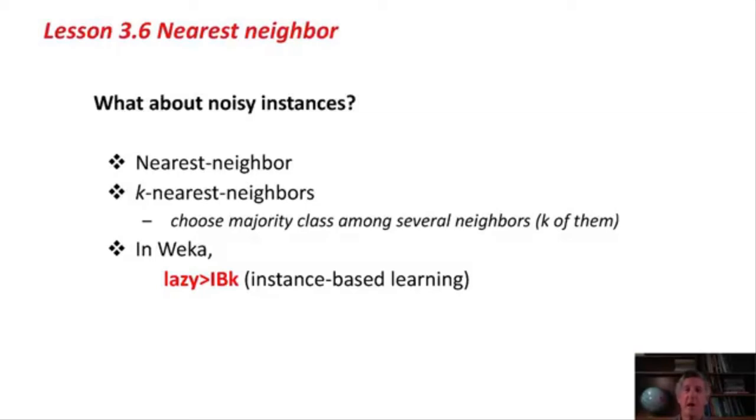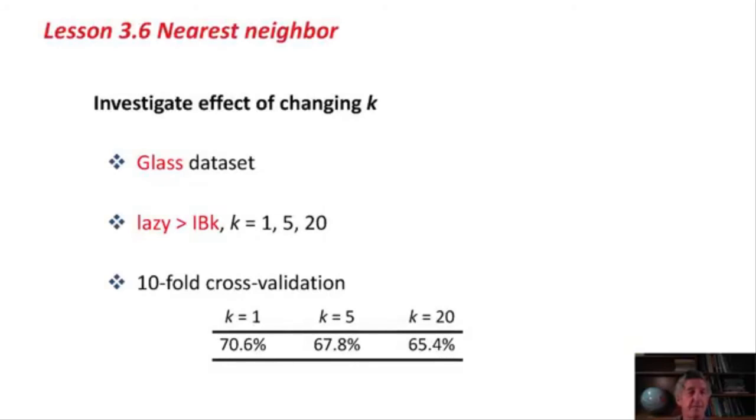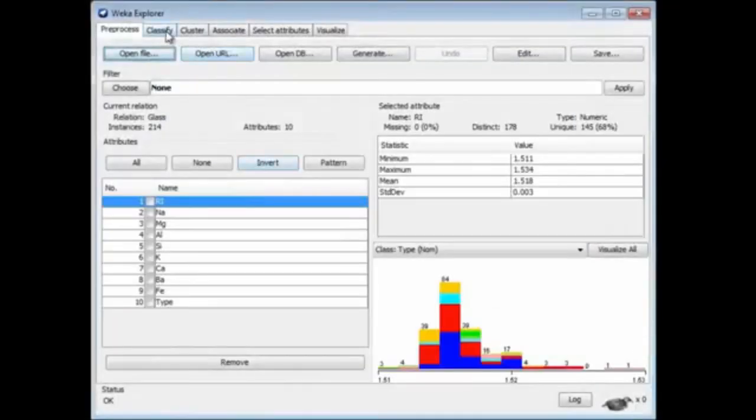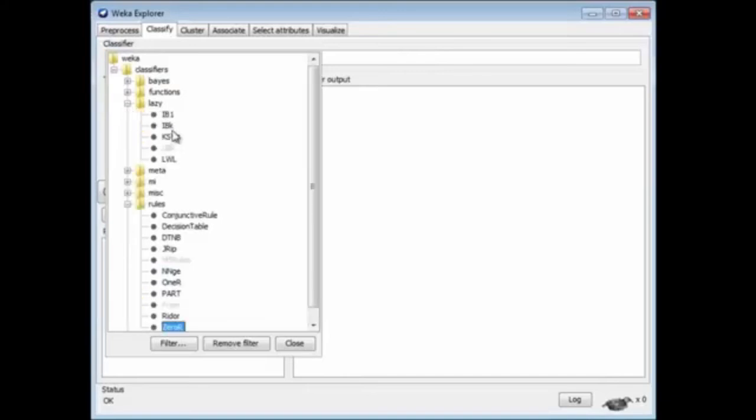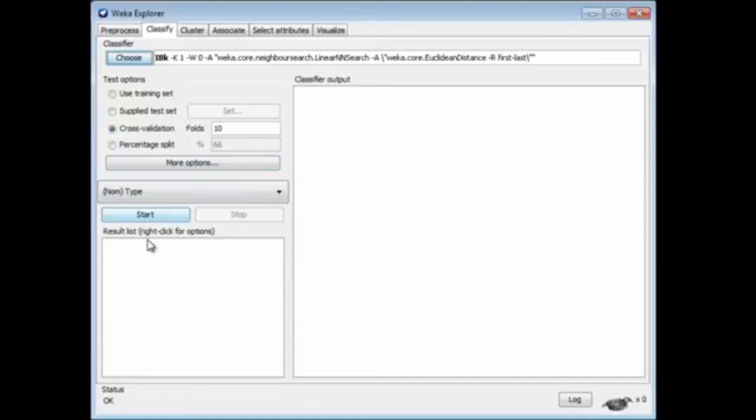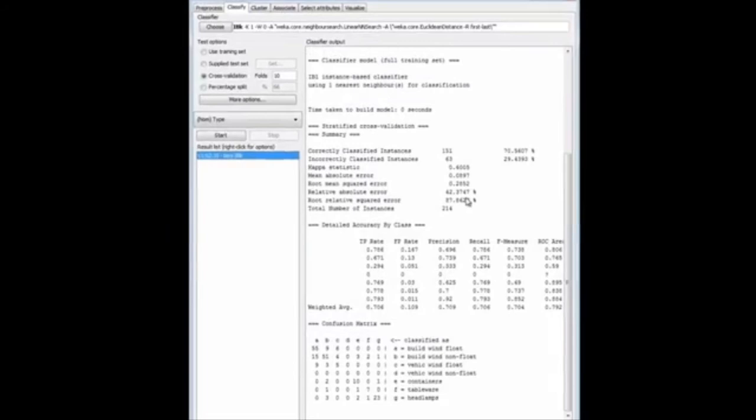In Weka, it's called IBK, instance-based learning with parameter k. It's in a lazy class. Let's open the Glass data set. Go to Classify, and choose the lazy classifier IBK. Let's just run it. We get an accuracy of 70.6%. The model is not really printed here because there is no model. It's just a set of training instances. We're using 10-fold cross-validation, of course.